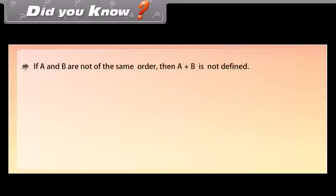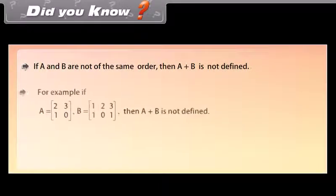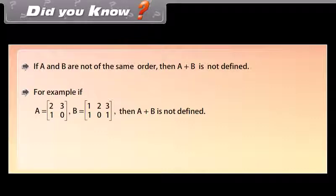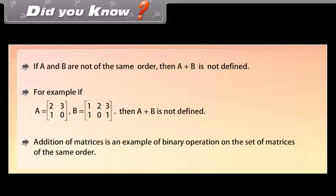Note: if A and B are not of the same order, then A + B is not defined. For example, if A is a 2 by 2 matrix with rows [2, 3] and [1, 0], and B is a 2 by 3 matrix with rows [1, 2, 3] and [1, 0, 1], then A + B is not defined. Addition of matrices is a binary operation on the set of matrices of the same order.